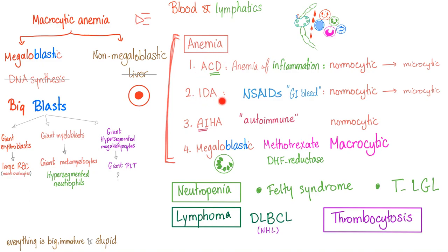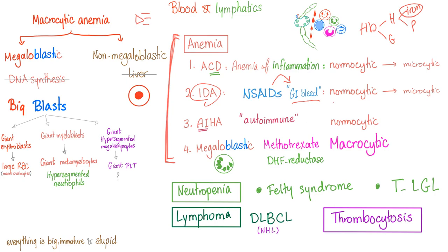What other kinds of anemia? Iron deficiency anemia. Why? Because Rheumatoid arthritis patients have pain. When they have pain, they take pain medicine — non-steroidal anti-inflammatory drugs — which cause gastritis, peptic ulcer disease, and GI bleed. When you bleed, you lose blood, you lose hemoglobin, you lose heme and globin. Heme has iron and protoporphyrins, so you're losing iron — hashtag iron deficiency anemia. Which starts as normocytic and then becomes microcytic.